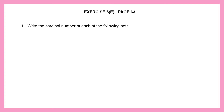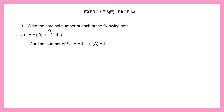Question 1: Write the cardinal number of each of the sets. In set A the elements are 0, 1, 2 and 4. All we need to do is count the number of elements: 1, 2, 3 and 4. So there are 4 elements here. Cardinal number of set A is 4, and we write it as n(A) = 4. N stands for cardinal number, A is set A, and 4 is the number of elements in it.